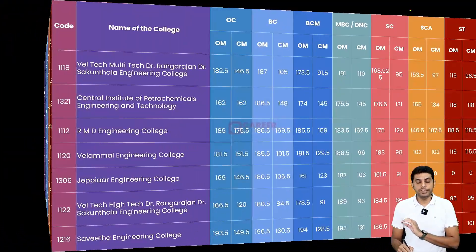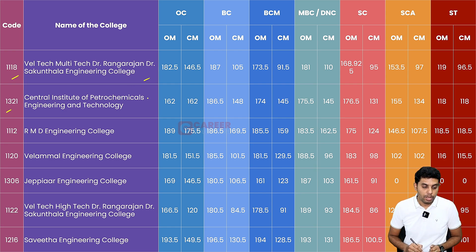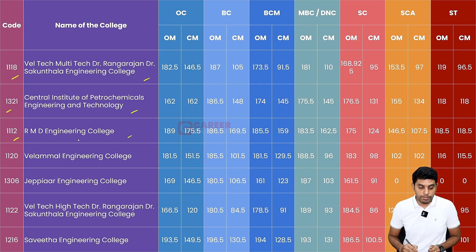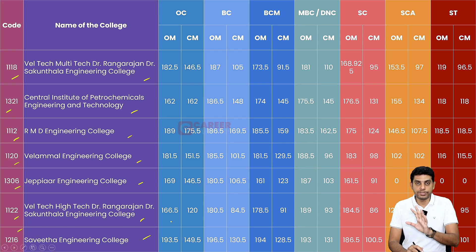The next list of colleges includes: 1118 — Vailtech Multitech Dr. Rangarajan Dr. Shakundala Engineering College; 1321 — Central Institute of Petrochemical Engineering and Technology; 1112 — RMD Engineering College; 1120 — Vela Mall Engineering College; 1306 — JPR Engineering College; 1122 — Vailtech High Tech Dr. Rangarajan Dr. Shakundala Engineering College; 1216 — Savita Engineering College. These are among the best 25 colleges in the Chennai region.